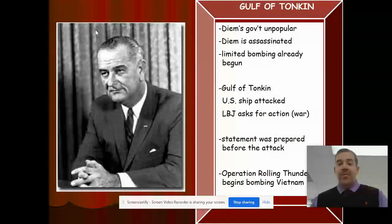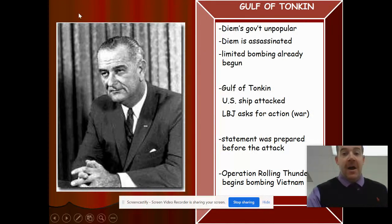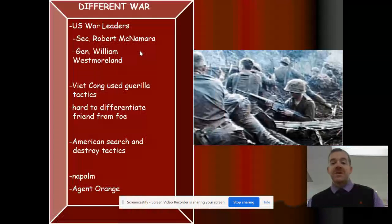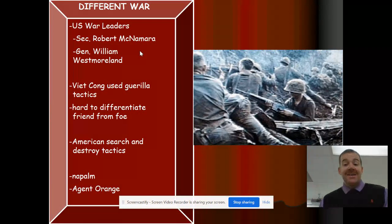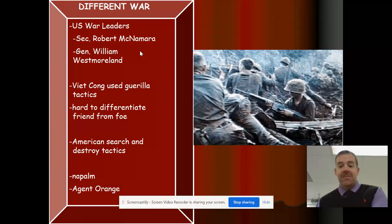With Operation Rolling Thunder, the United States began bombing Vietnam — that's Lyndon Baines Johnson on the left. It's a different type of war because members of the military didn't necessarily know who the enemy was. It was a guerrilla type of warfare, making it hard to differentiate friend from foe.